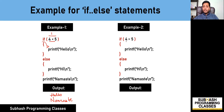In the next example, is 4 greater than 5? This condition is false — it results in a zero value, so if of zero is false. Therefore, the if block is skipped and the program control enters the else block. The set of statements in the else block is executed, printing 'hi', then it comes out and executes 'namaste'. So the output is 'hi, namaste'.